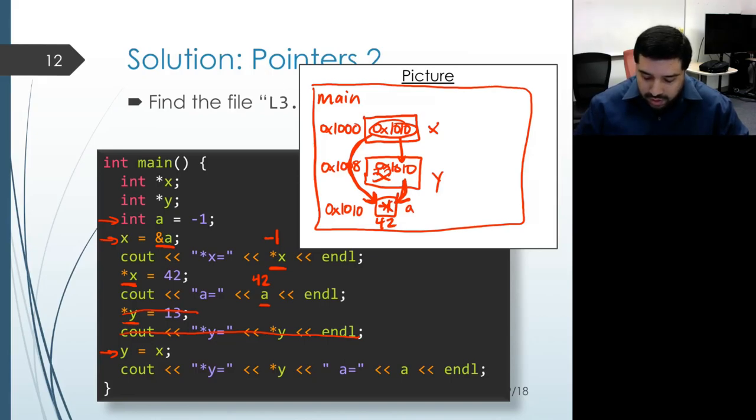Finally on the last line we print out the result of dereferencing Y, which will follow the pointer to what it's pointing at, namely the A object, and print out the value there. That value is 42. And then we also just print out the value of the A object, which is 42.